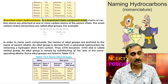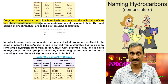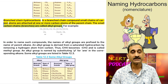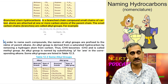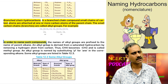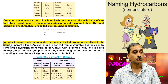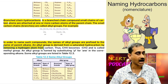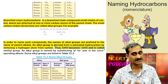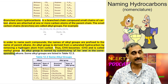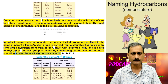Branched chain hydrocarbons: in a branched chain compound, small chains of carbon atoms are attached at one or more carbon atoms of the parent chain. These small carbon chains, or branches, are called alkyl groups. In order to name such compounds, the names of alkyl groups are prefixed to the name of the parent alkane. An alkyl group is derived from a saturated hydrocarbon by removing a hydrogen atom from carbon — thus CH4 becomes CH3 and is called the methyl group. An alkyl group is named by substituting '-yl' for '-ane' in the corresponding alkane. Some alkyl groups are listed in Table 12.3.